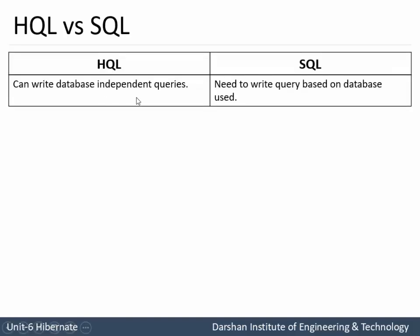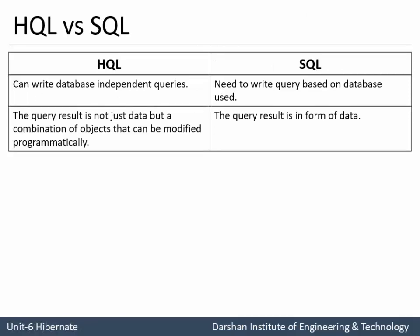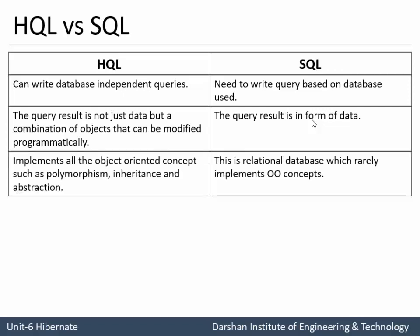Now the differences between HQL and SQL. First: HQL can write database independent queries, while SQL queries depend on the database used in the backend. Second: in HQL, the query result is a combination of objects that can be modified programmatically, since all data is treated as objects. In SQL, the result is raw data that must be handled using the ResultSet interface as in JDBC. Third: HQL implements all object-oriented concepts such as polymorphism, inheritance, and data abstraction, while SQL uses a relational database that rarely implements OOP concepts.